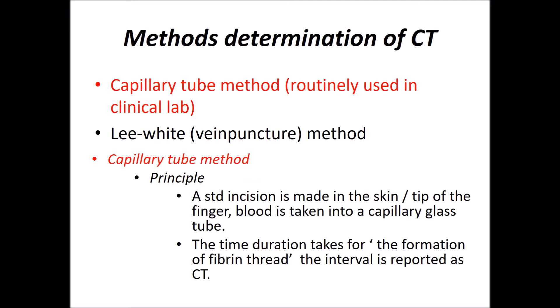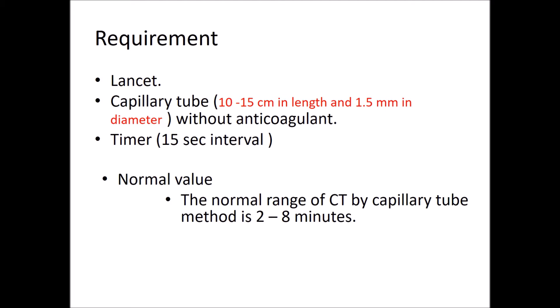Today we are going to use the capillary tube method. The principle is: a standard incision is made in the skin or tip of the finger, blood is taken into a capillary glass tube, and the time duration taken for the formation of a fibrin thread is reported as clotting time. Requirements: lancet, capillary tube, and timer. The capillary tube characteristics are 10 to 15 centimeters in length and 1.5 mm in diameter, with no anticoagulant coating — that is important to note.